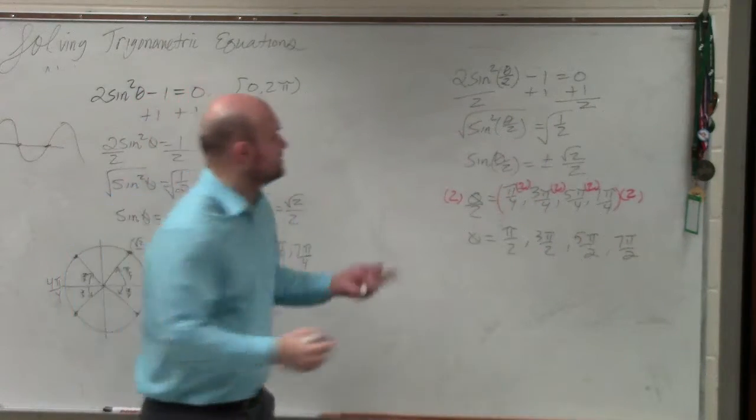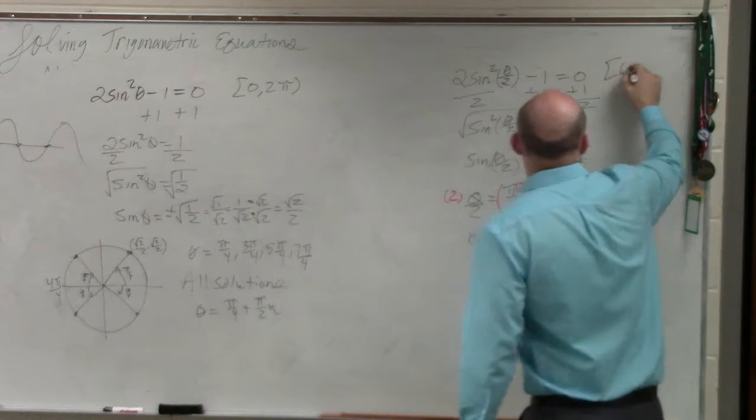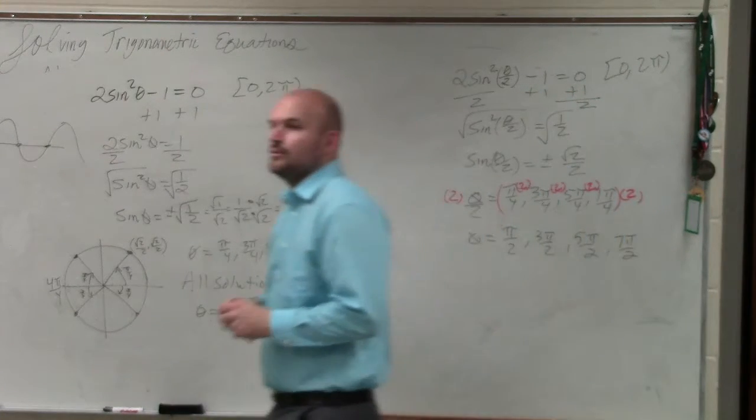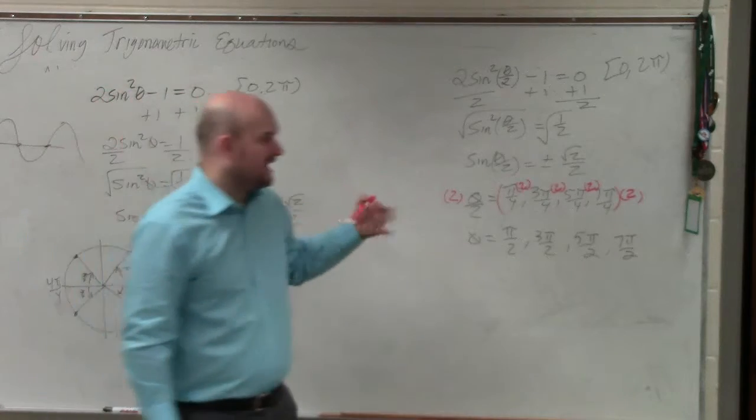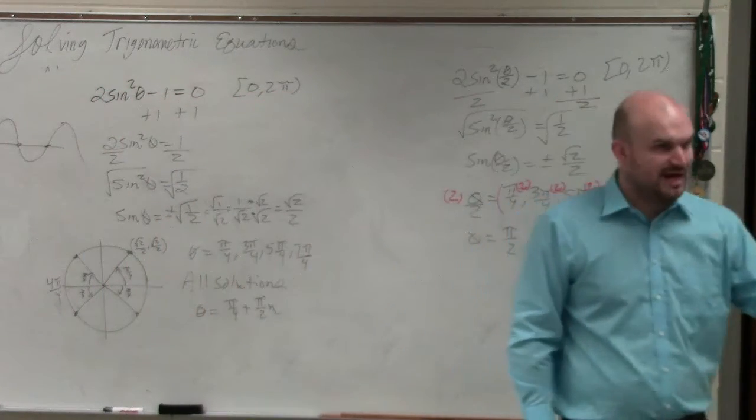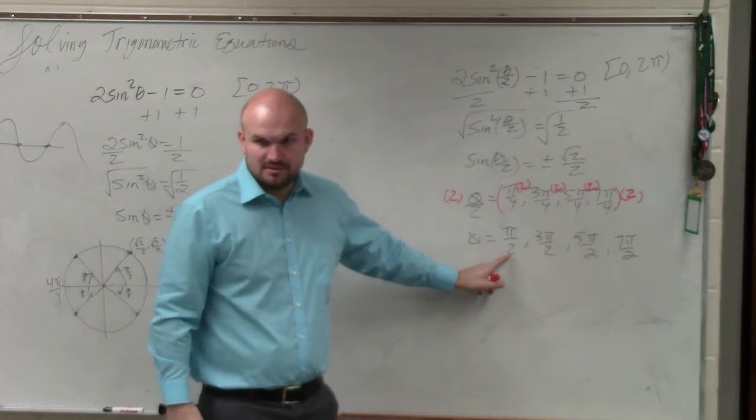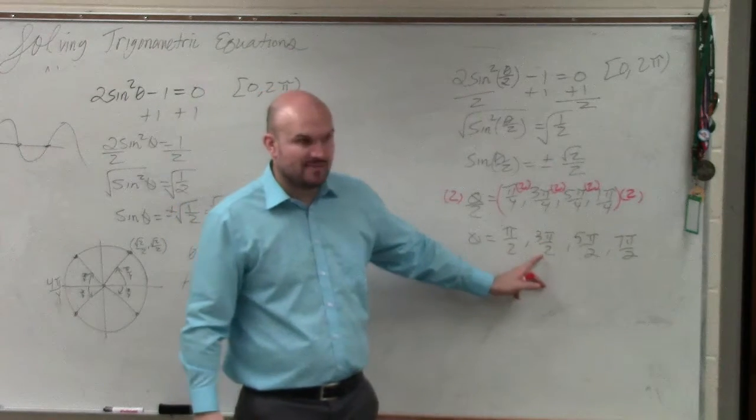Now, remember, I'm sorry, I didn't write your constraint. Your constraint has to be between 0 and 2 pi. So we need to now make sure that our angles are between 0 and 2 pi. Is pi halves between 0 and 2 pi? Yes. 3 pi halves? Yes.